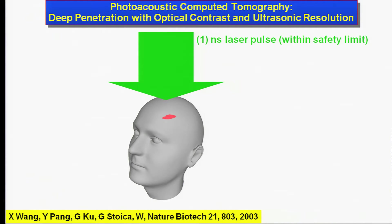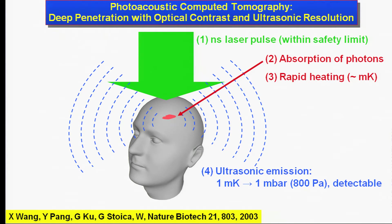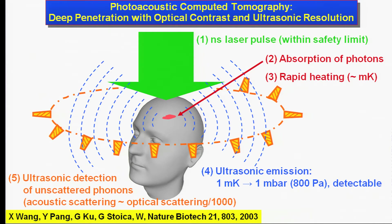Photoacoustic tomography combines light and sound to enhance penetration and resolution. When implemented in the form of computed tomography, a broadened laser beam illuminates the tissue. Absorption of any photons, scattered or not, generates heating and subsequent acoustic emission. Ultrasonic detection of the acoustic waves provides resolution for high-resolution imaging. Essentially, we see the optical absorption contrast by listening to the object.